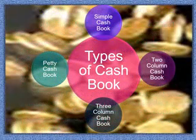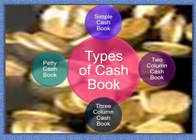We have four kinds of cash book: the simple cash book, the double column cash book, the triple column cash book, and the petty cash book. Now we will look at all these types of cash book one by one.